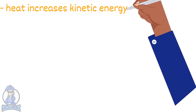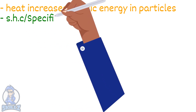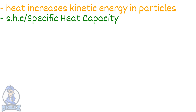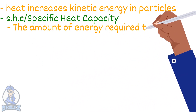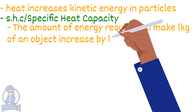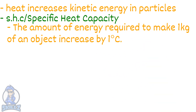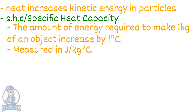When we add heat energy to any state of matter, it increases the kinetic energy of the particle, which we detect as an increase in temperature. The SHC, or specific heat capacity, of something is the amount of energy required to increase one kilogram of that substance by one degree Celsius. SHC is measured in joules per kilogram degree Celsius.